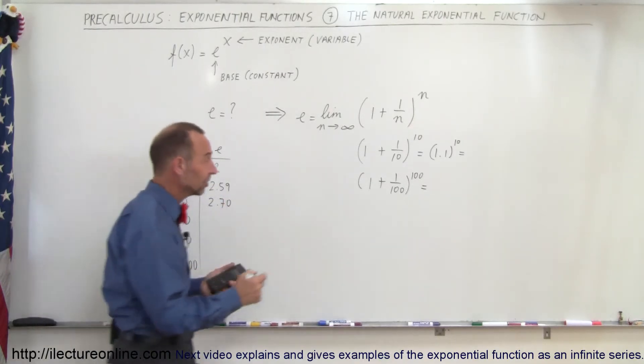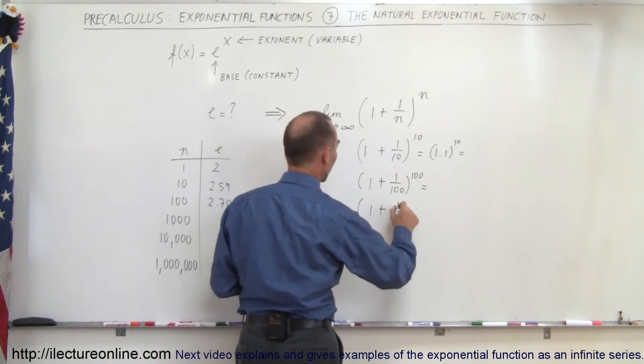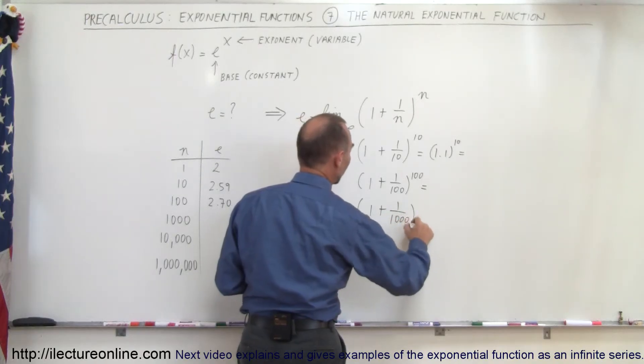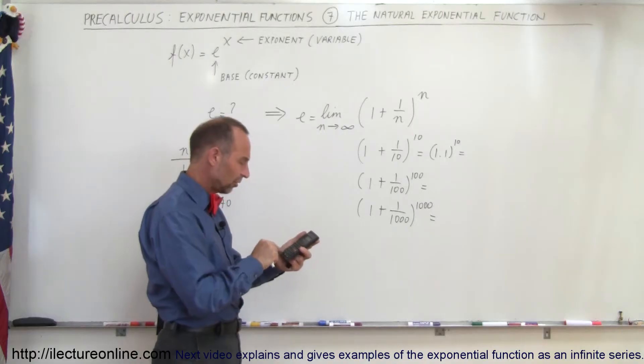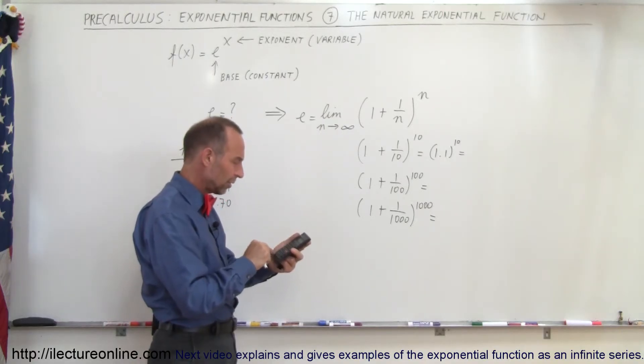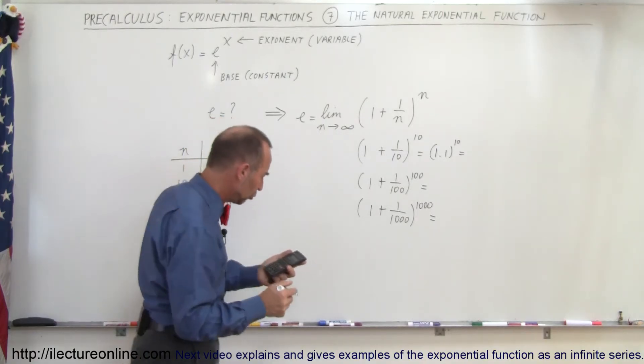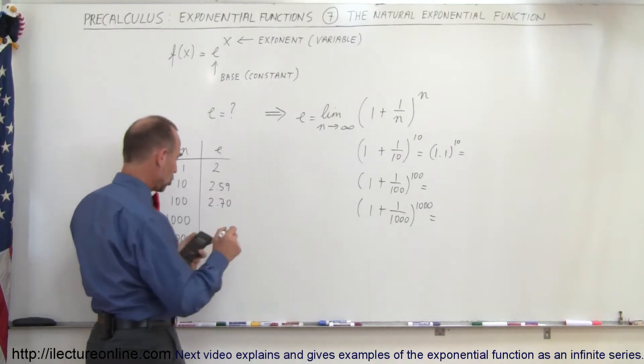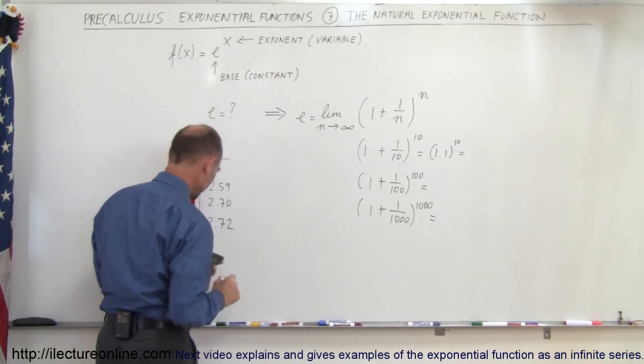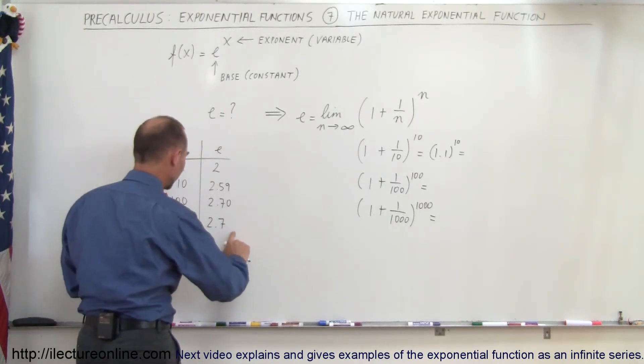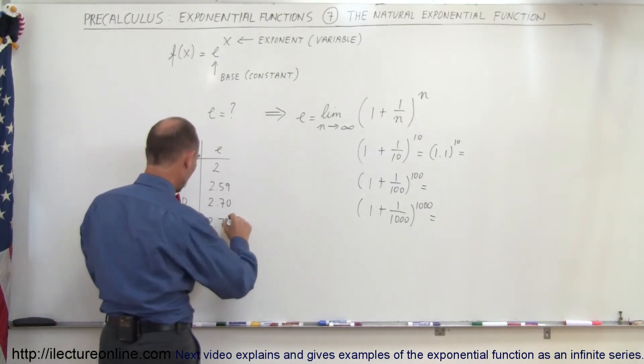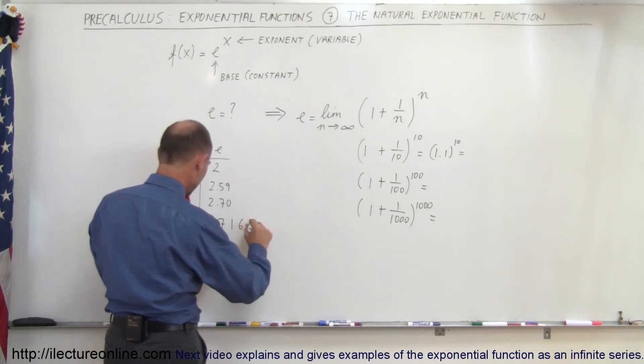Continuing, now let's grab a thousand. So we have 1 plus 1 over 1000 raised to the 1000 power. So we get 1.001 raised to the 1000 power, and we get 2.72. I'm going to now keep more significant figures. So let's write 2.7169292.